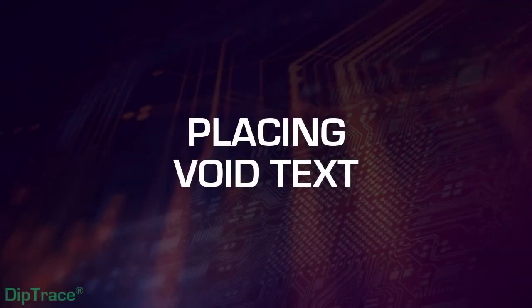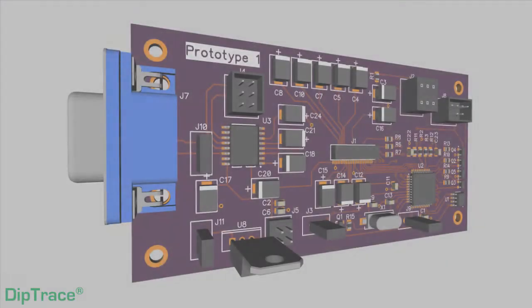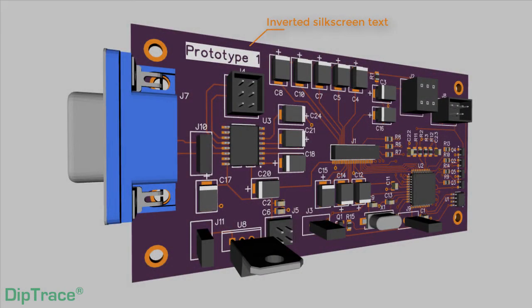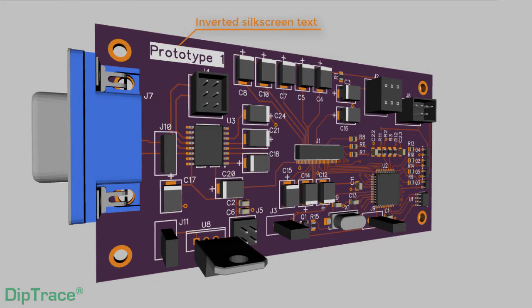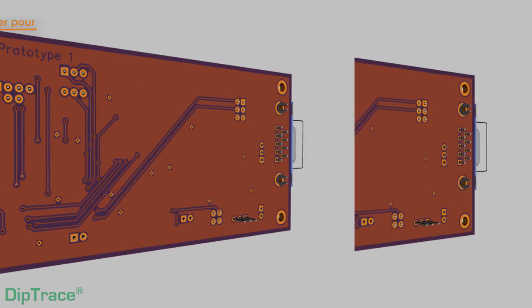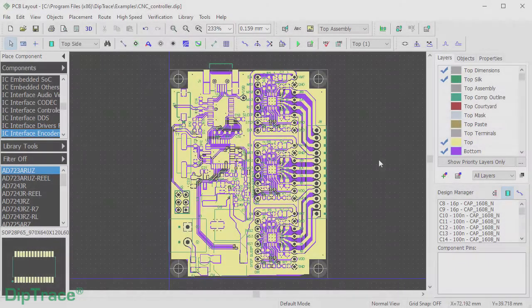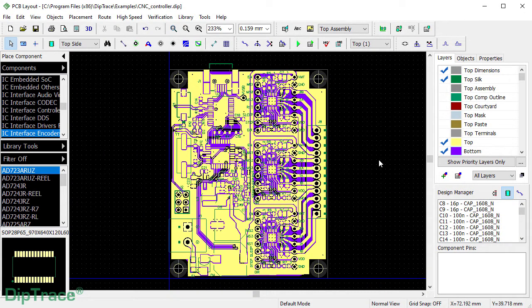In this video we are going to show how to place an inverted silkscreen text, a void text in the copper pour, as well as an exposed copper text on your PCB. Let's begin with void text in copper pour.